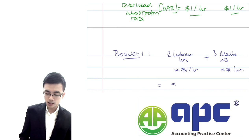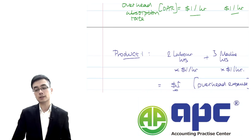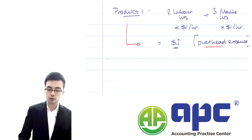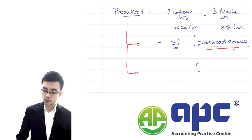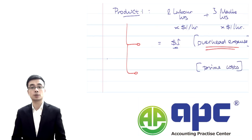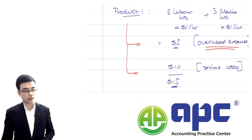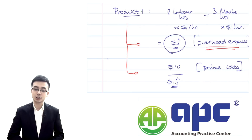For product one, suppose it needs 2 labour hours in department one and 3 machine hours in department two. We calculate: (2 × $1) + (3 × $1) = $5 as the total overhead expense absorbed into that product. That's how absorption costing works — that's how we derive the $5 overhead per unit.